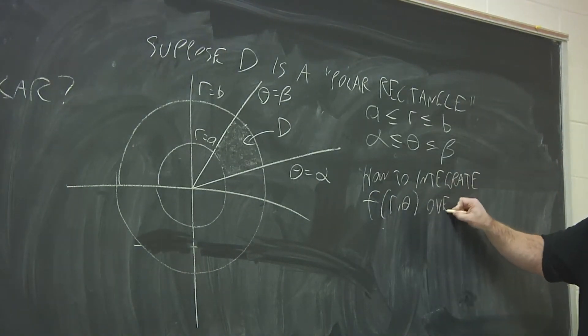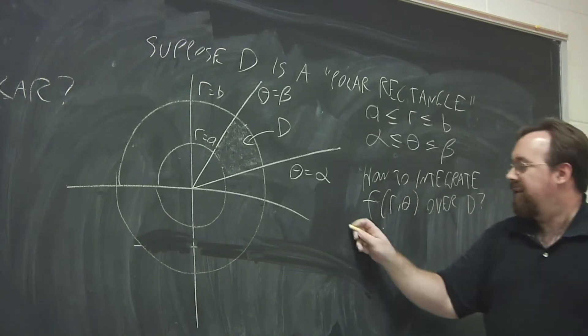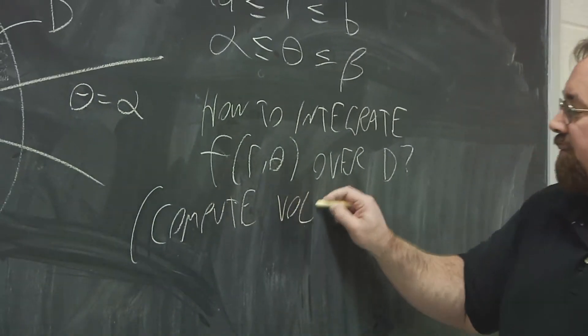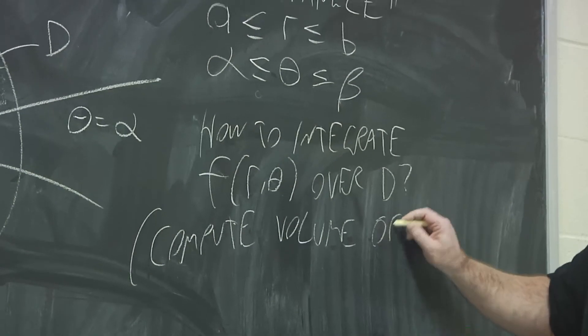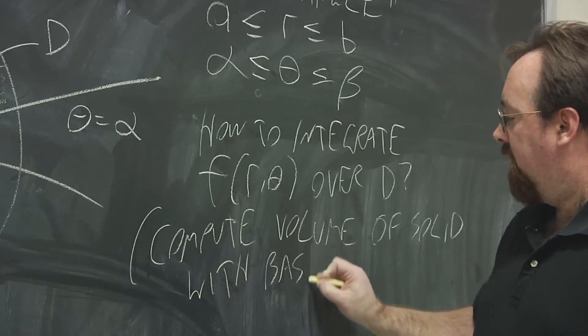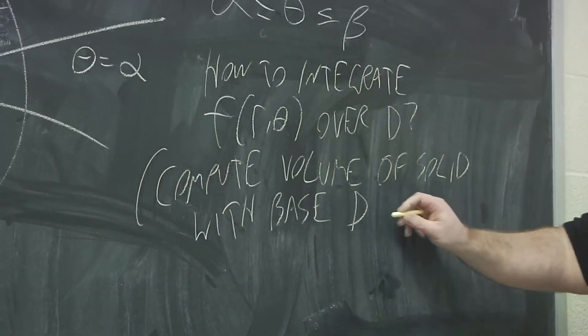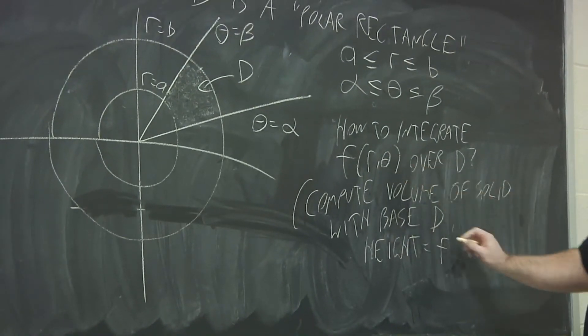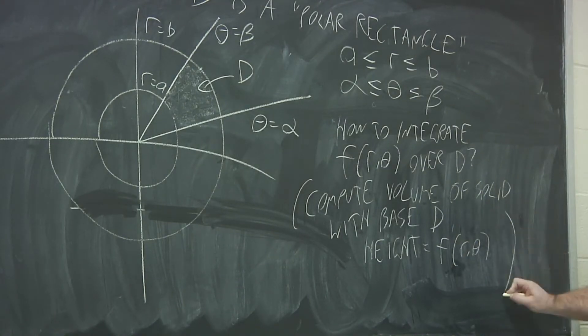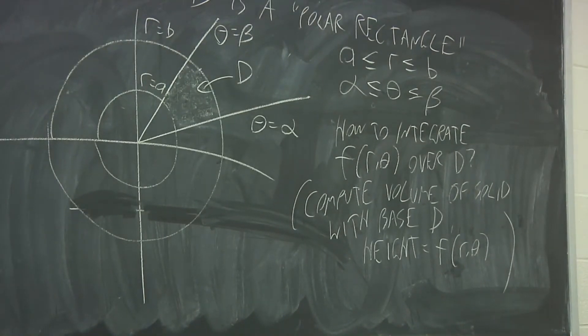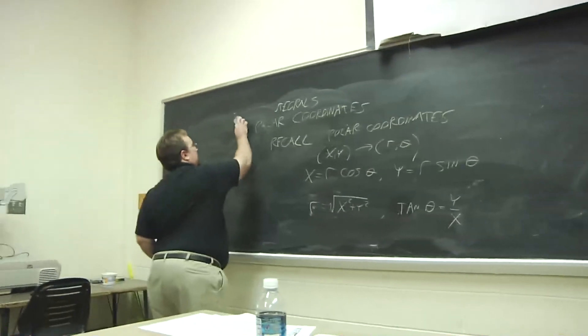Integrate f of r theta over D. Or really, what we want to do is compute the volume of a solid, where the base is given by D, and the height is given by this function f of r theta. So that's really what we want to do. It's not just a matter of integrating f over D, but we really want to compute the volume of a solid determined by f of r theta and D.